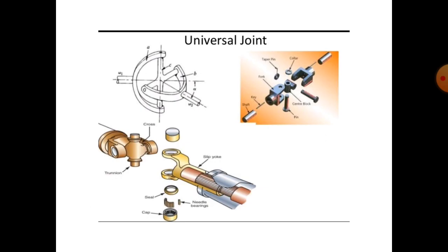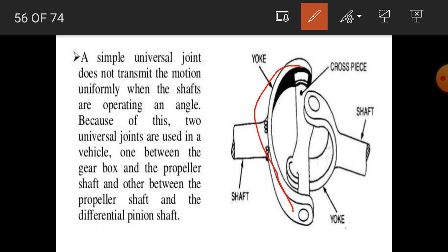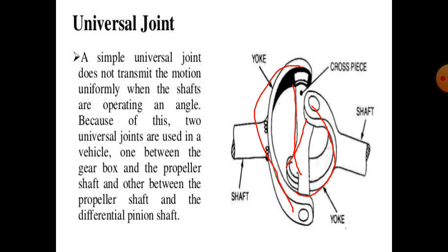Next is the universal joint. In the diagram, there are two forks or two yokes connected with a cross pin. The cross pin is connected with a number of caps, seals, and needles. Looking at the diagram: one yoke and a second yoke are visible. Then the cross piece is there, and in this cross pin, cups and keys are used.